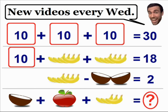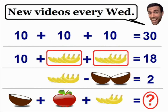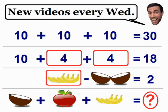Using all of this information, we can now find the values of the bananas in the second equation. We know that the bananas must have a value of 4 in order to make this equation true — 10 plus 4 plus 4 is equal to 18. If you look in our third equation, we also have a set of bananas, and we know they have a value of 4, so we can plug in a 4 into the bananas of our third equation.